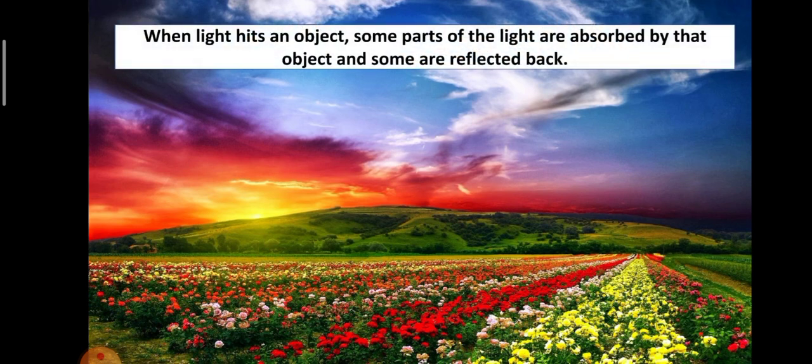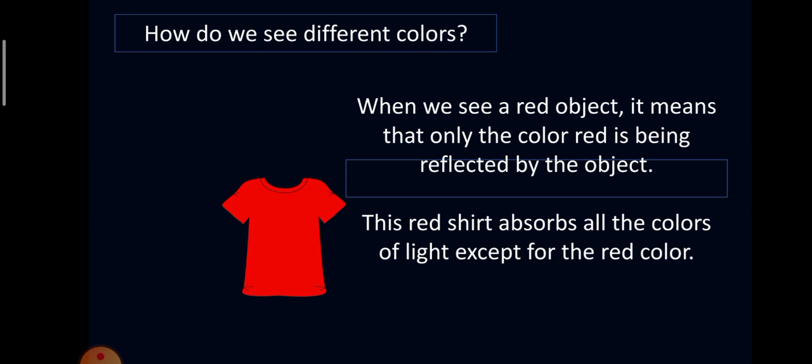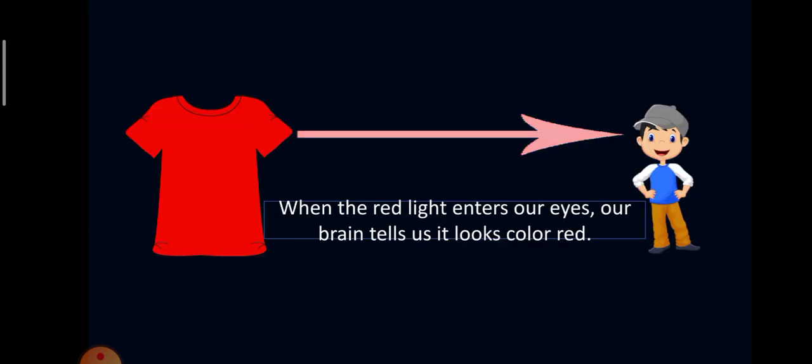When light hits an object, some parts of the light are absorbed by the object and some are reflected back. Again, how do we see different colors? When we see a red object, it means that only the color red is being reflected by the object. This red shirt, for example, absorbs all the colors of light except for the red color. When the red light enters our eyes, our brain tells us it looks color red.